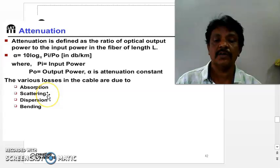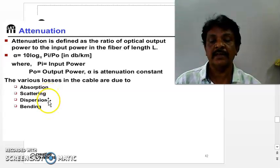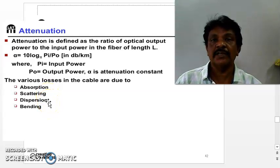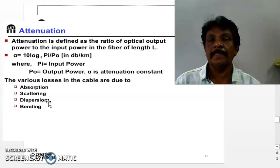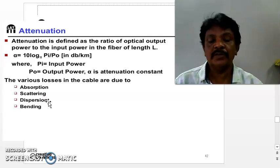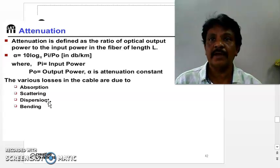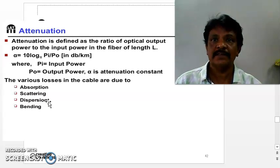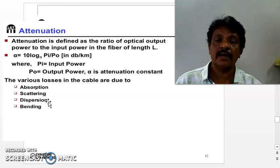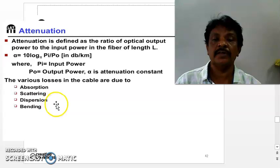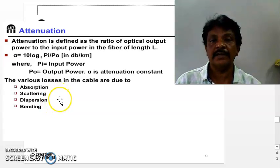The next one is dispersion. The dispersion of signal also causes attenuation. Signal dispersion means pulse to pulse, there is a time gap. Within this time gap, as the input signal pulse gap is not equal to the output signal pulse gap, there is a dispersion found in the case of propagating the light signal from one end to the other end.